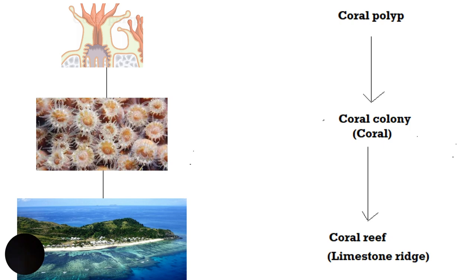Coral reefs are built by corals, and the corals are colonies of coral polyps. In other words, coral polyps — which are tiny marine organisms — live together in a group called a colony or a coral, and the coral as a community builds the reef. Not all corals build reefs; corals can be broadly divided into hard coral or stony coral and soft corals. It is the stony corals that actually build the coral reefs.